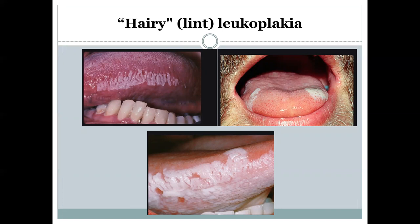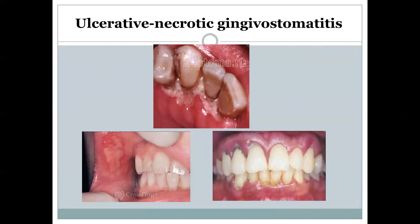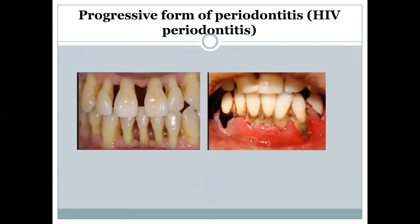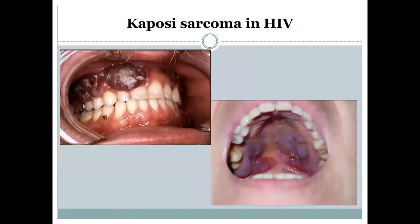Here is an example of hairy leukoplakia in different stages in a person with AIDS. The following pictures show ulcerative necrotizing gingival stomatitis, which can appear in different places in the oral cavity — on the cheeks, on the gingiva, or near the neck of a tooth. And here is an example of progressive periodontitis and Kaposi's sarcoma, both caused by HIV infection, shown with different levels of severity.